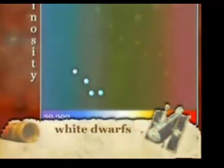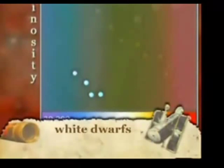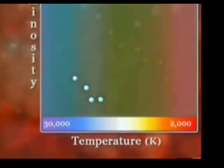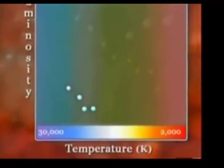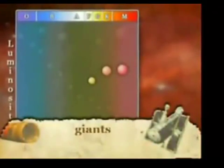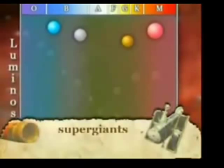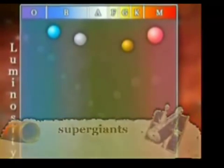Stars known as white dwarfs are plotted off the main sequence at the lower left and exhibit low luminosity but high temperatures. This means that these stars are of similar brightness to red dwarfs but have even smaller diameters. Stars known as giants plot to the right of the main sequence and are 10 to 100 times larger in diameter than the Sun - larger and brighter than main sequence stars of the same temperature. Supergiants are very luminous stars, both hot and cool, plotted in the upper portion of the diagram. These stars can have diameters thousands of times greater than our Sun.